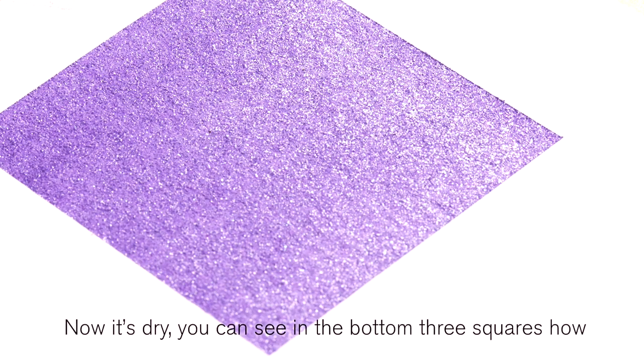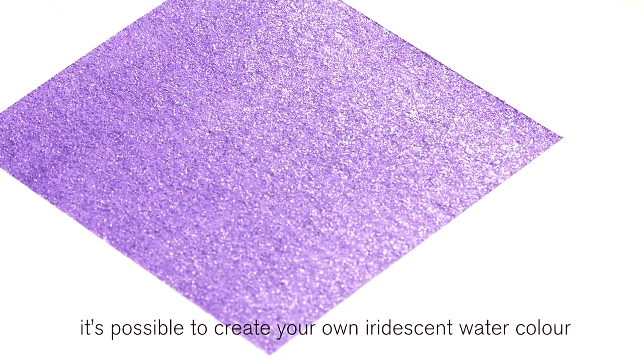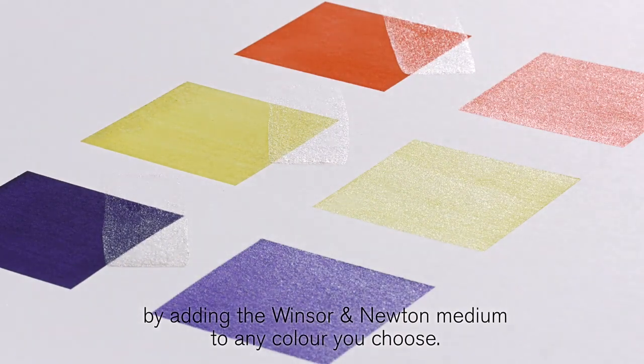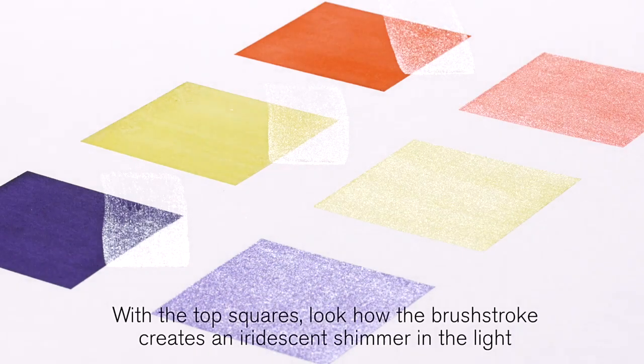Now it's dry, you can see in the bottom three squares how it's possible to create your own iridescent watercolor by adding the Winsor & Newton medium to any color you choose. With the top squares,